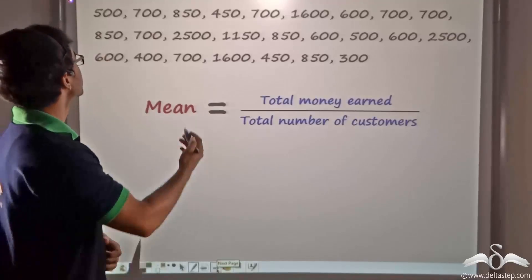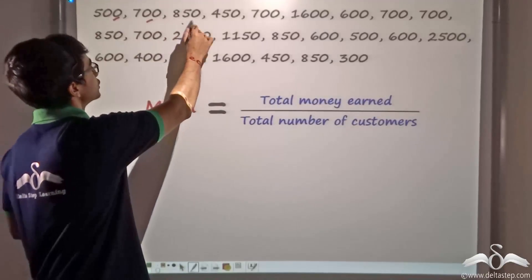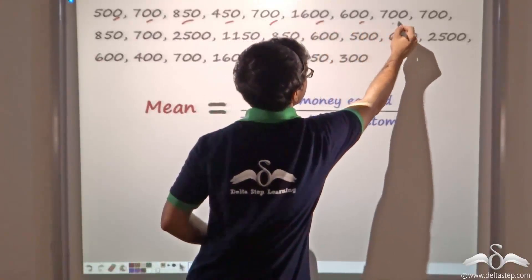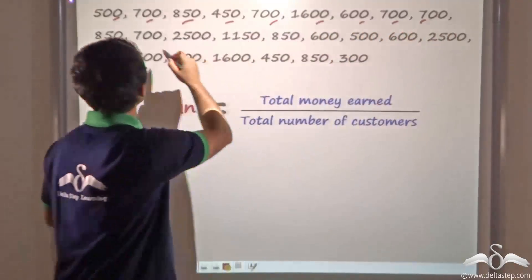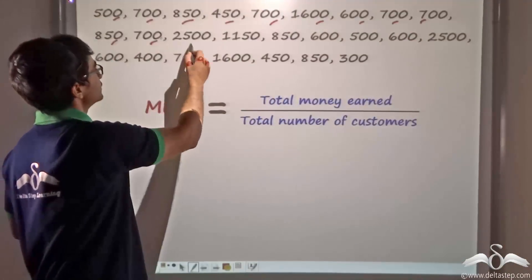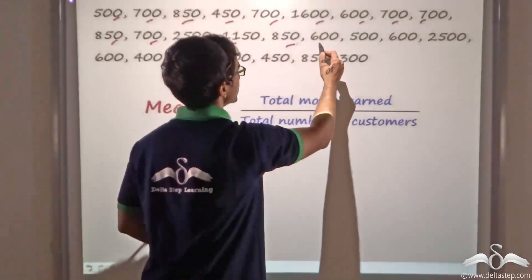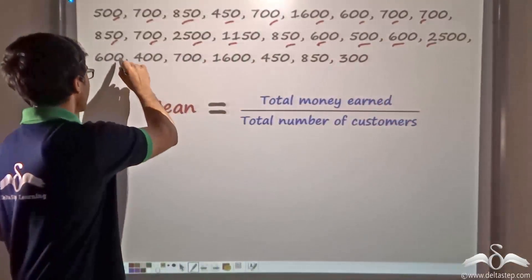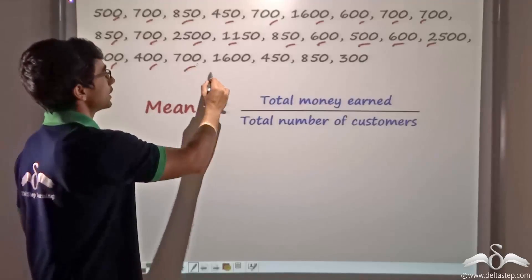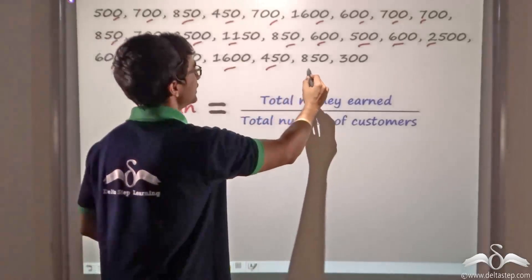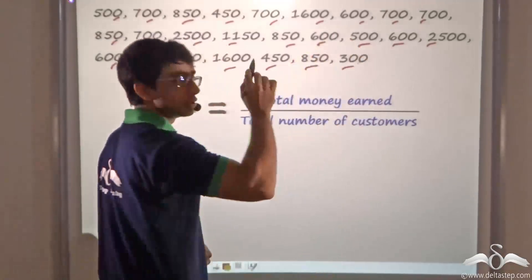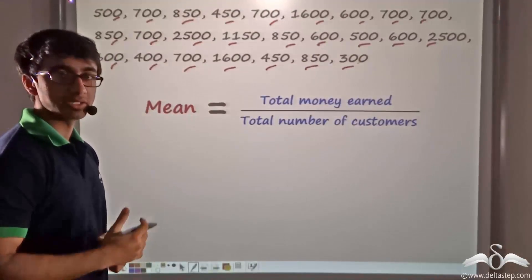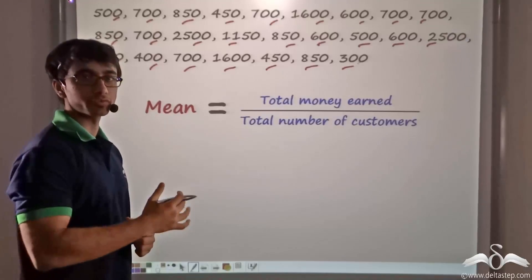If I count, it will be 1, 2, 3, 4, 5, 6, 7, 8, 9, then again 10, 11, 12, 13, 14, 15, 16, 17, 18, 19, 20, 21, 22, 23, 24 and 25. So he had a total of 25 customers come in and buy the various dresses that he had to offer.